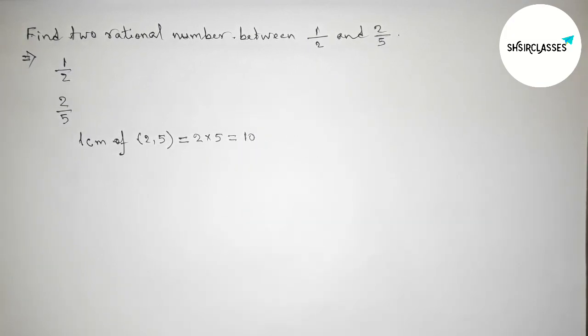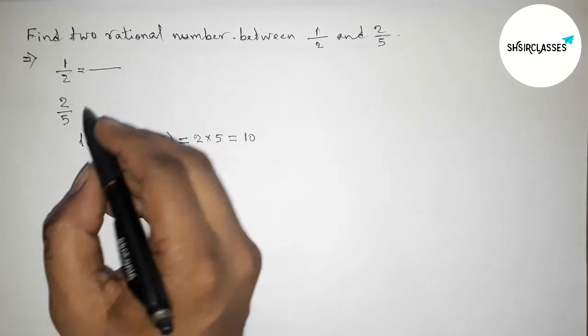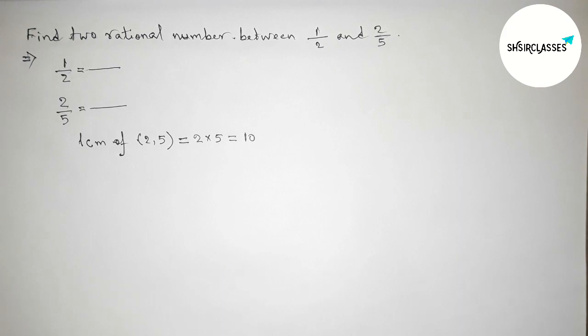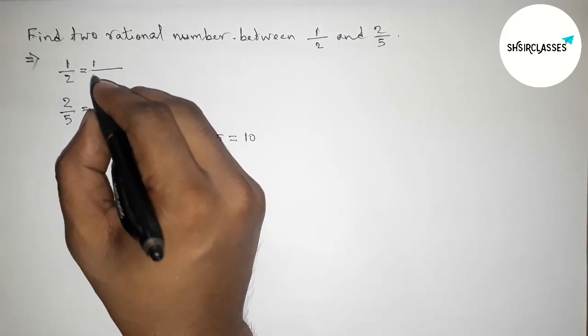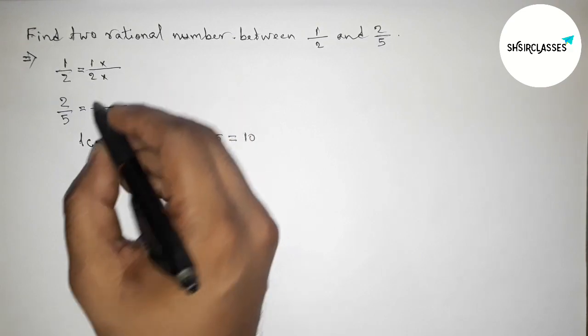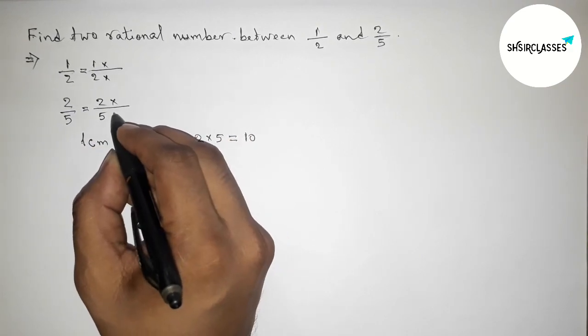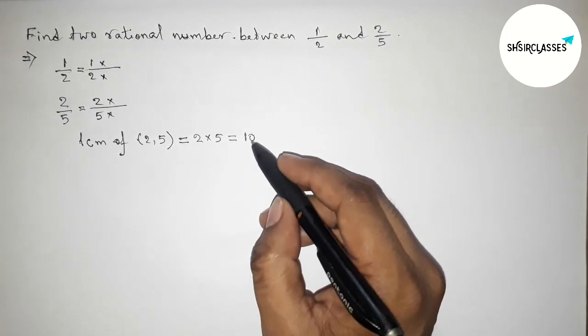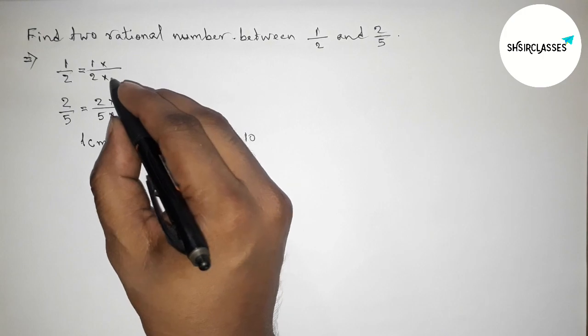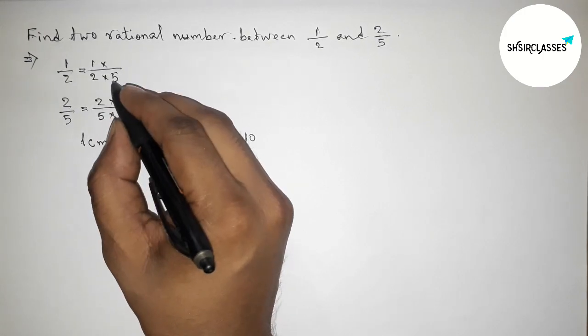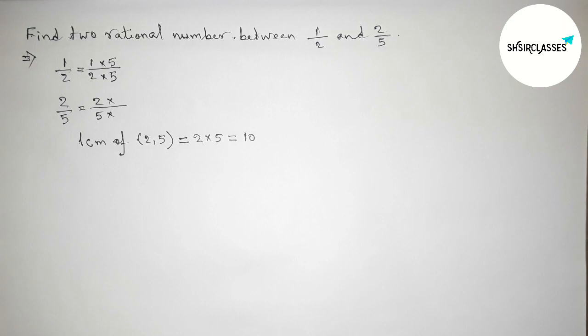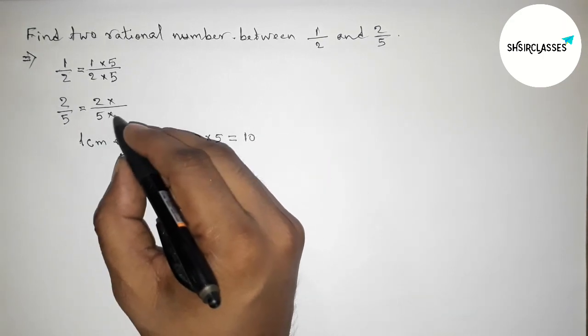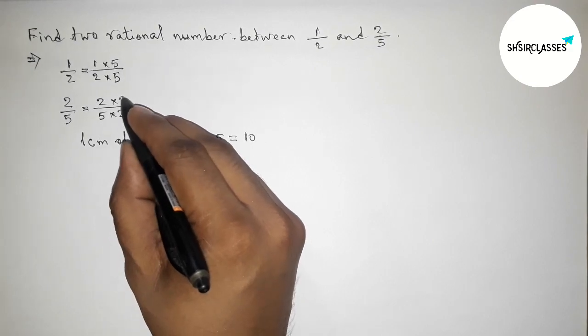Now we have to first make the denominator equal to 10. So first write down here 1 by 2, and similarly 2 by 5, and taking multiplication up and down. First making 10 equal denominator, so here 2, 5 are 10, so taking 5 up and down. Again making 10 denominator, so 5, 2 are 10, so taking 2 up and down.